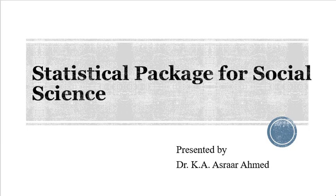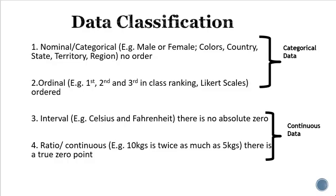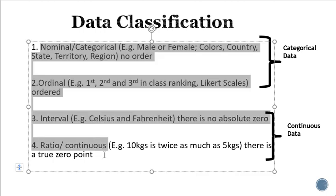There are four types of classification of data. First data is called nominal data, the second is called ordinal data, the third type is called interval data, and the fourth type is called ratio or continuous data. Now let us understand these four in a very simple manner.